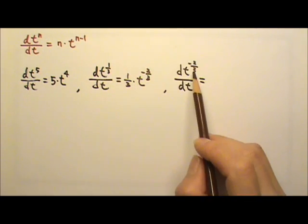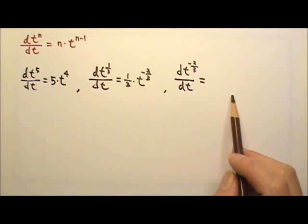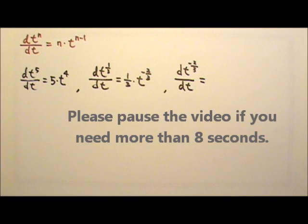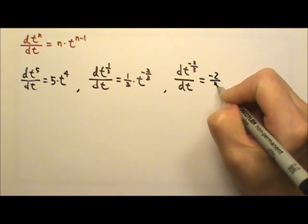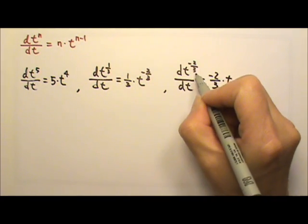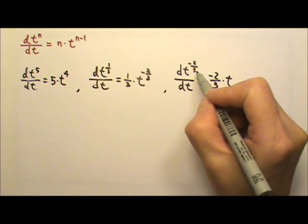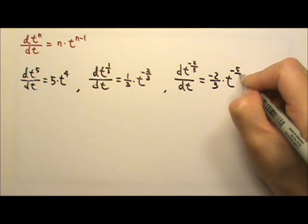The equation works for negative exponents as well. Again, we bring down the exponent as a coefficient, and we lose one degree of power. So negative 2 thirds minus 1 gives us negative 5 thirds.